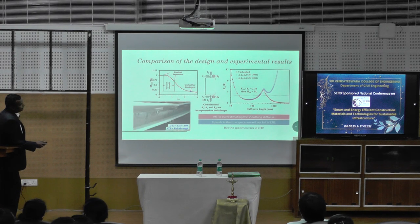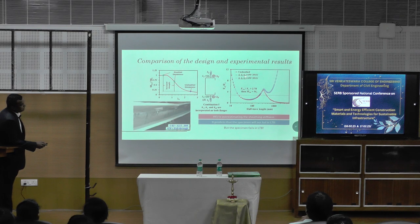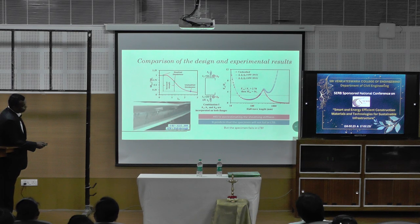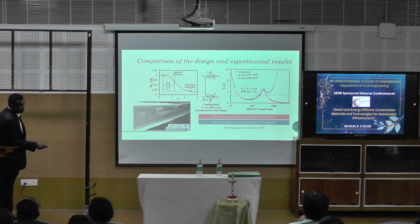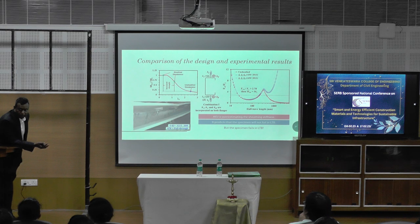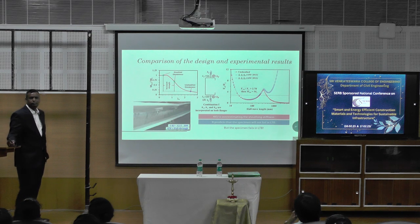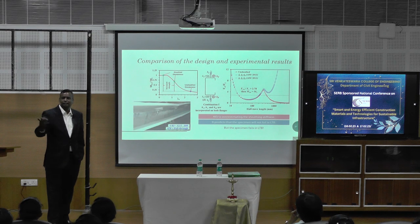We studied the experimental results against the design calculations. The design says to calculate KX, KY, and Kphi, where KX is the spring stiffness in the x-direction, KY is the spring stiffness in the y-direction, and Kphi is the rotational spring stiffness. What we realized is that when we put KX, KY, and Kphi all combined and incorporated in both flanges, we saw that AISI — the American Iron and Steel Institute — is overestimating the sheathing stiffness. It predicts the member will not fail in LTB — lateral torsional buckling.